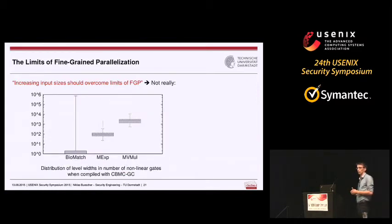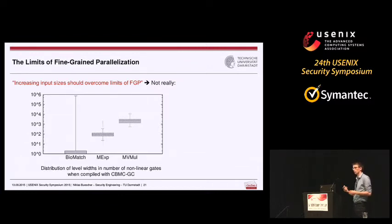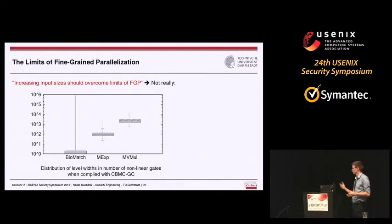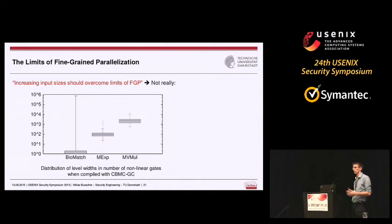A question raised during review was: why not simply increase input sizes so fine-grained parallelization suffices? Looking at current high-level open-source compilers for secure computation — for example CBMC-GC — they do not produce circuits with high width. The biometric matching application has an average circuit width in the single-digit range, even though the circuit has 60 million gates. Only the matrix-vector multiplication has an average width around 1,000 nonlinear gates per level, which leads to efficient parallelization. The reason is that current compilers minimize nonlinear gates, not circuit width — for instance, array accesses compile to circuits with linear depth and constant width.